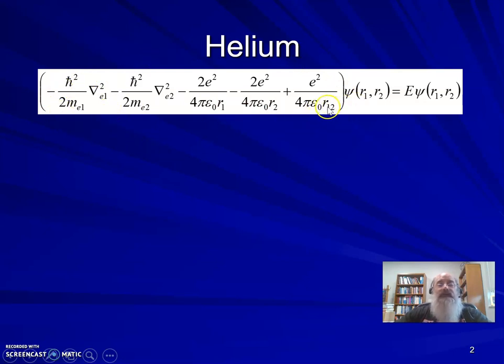So now we have our first guess at how a Hamiltonian might look. Notice the r's here. This is the distance between electron 1 and 2, this is the distance between the nucleus and electron 2, and this is the distance between the nucleus and electron 1. We have our full Schrödinger equation, at least approximated.